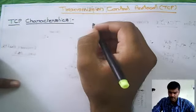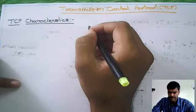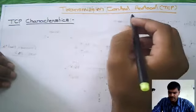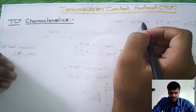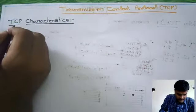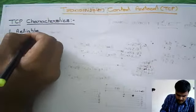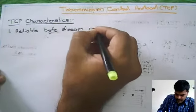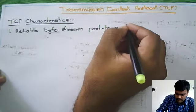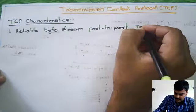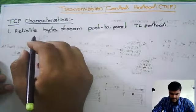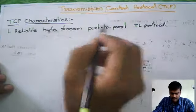Hello everyone. Hope you understood why the name TCP/IP came together for that network technology. Now in this chapter, we are going to see TCP — Transmission Control Protocol — separately. So in TCP, first of all, if you see the characteristics, the first one is: TCP is a reliable byte stream, two-port transport layer protocol.